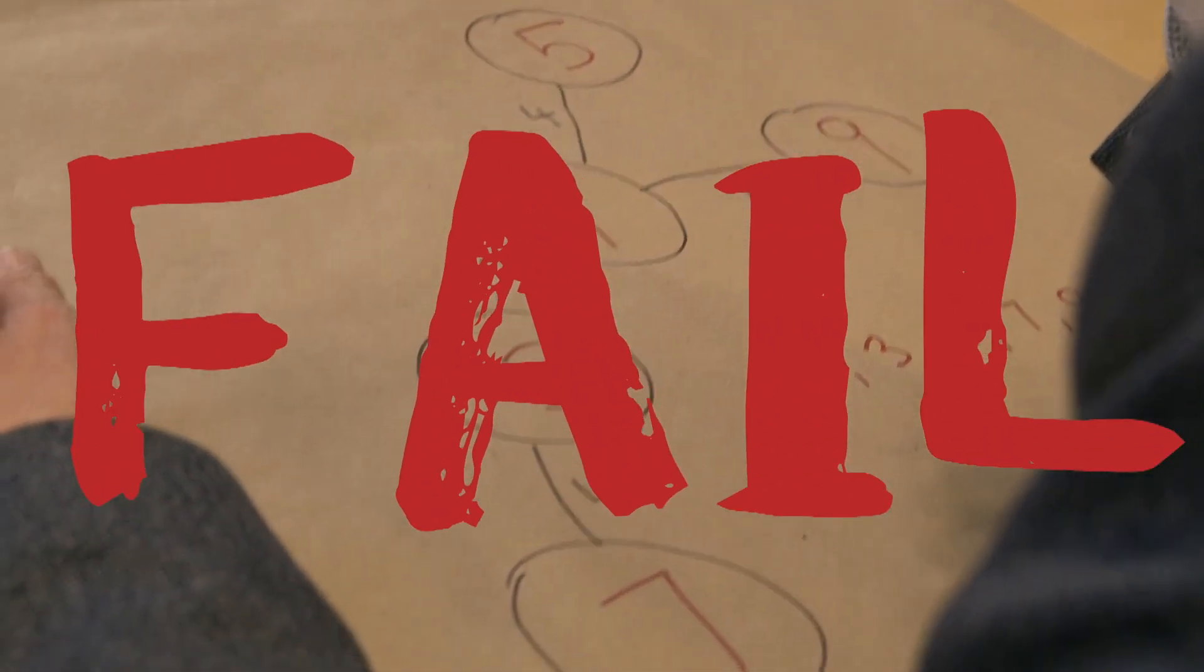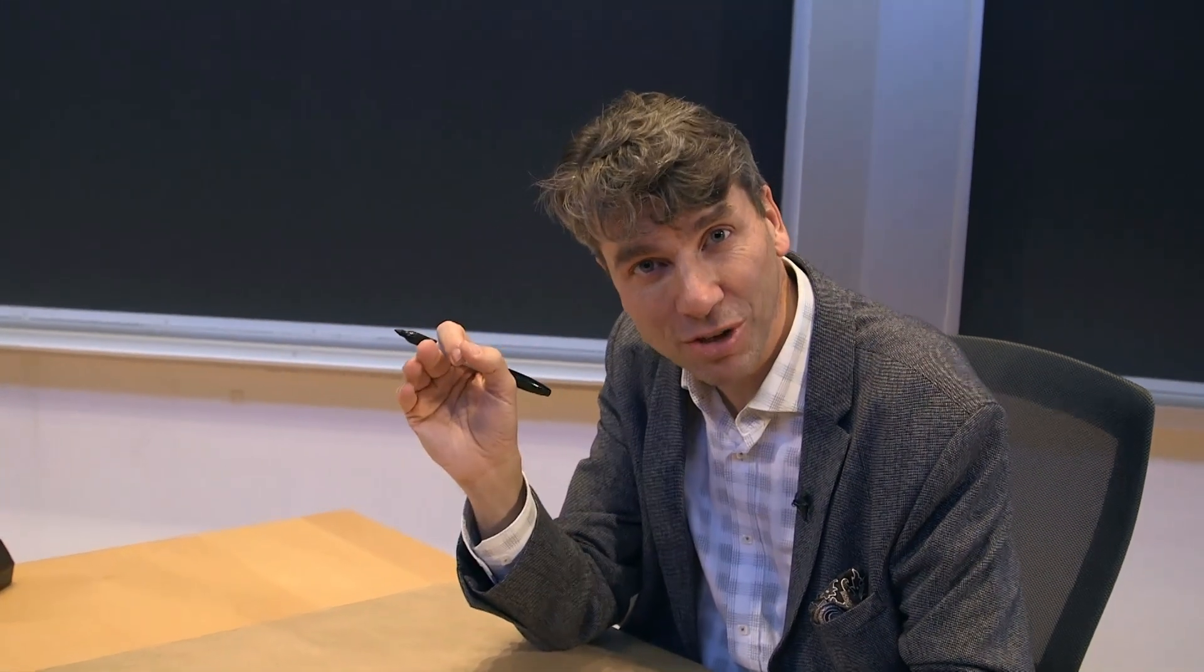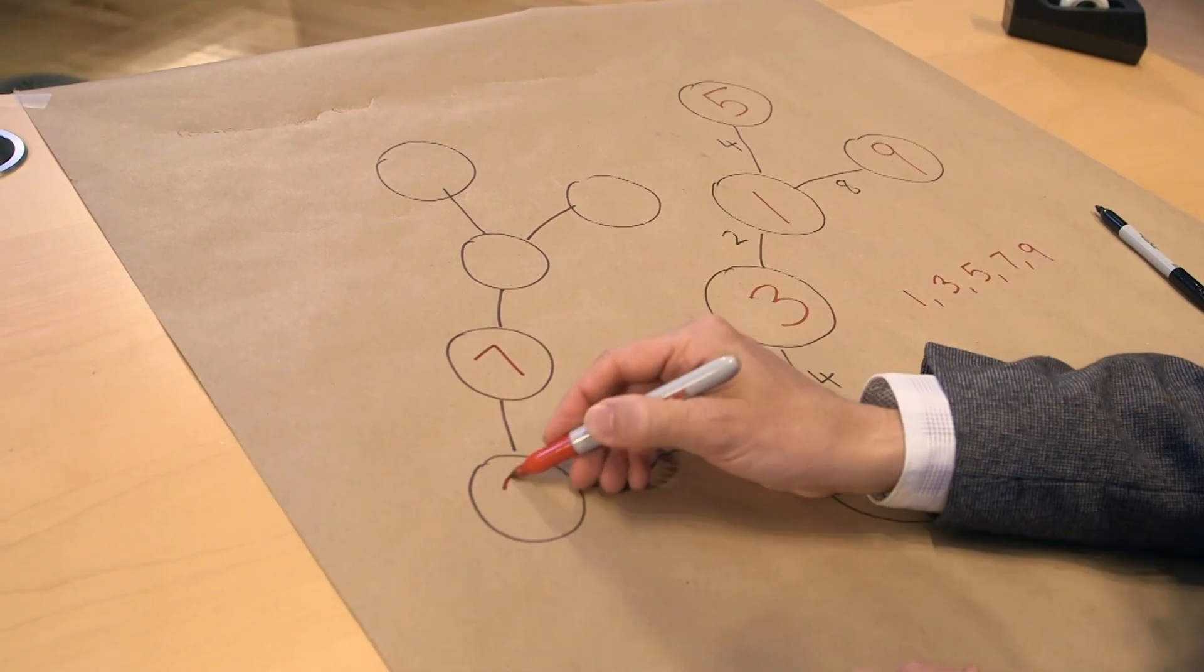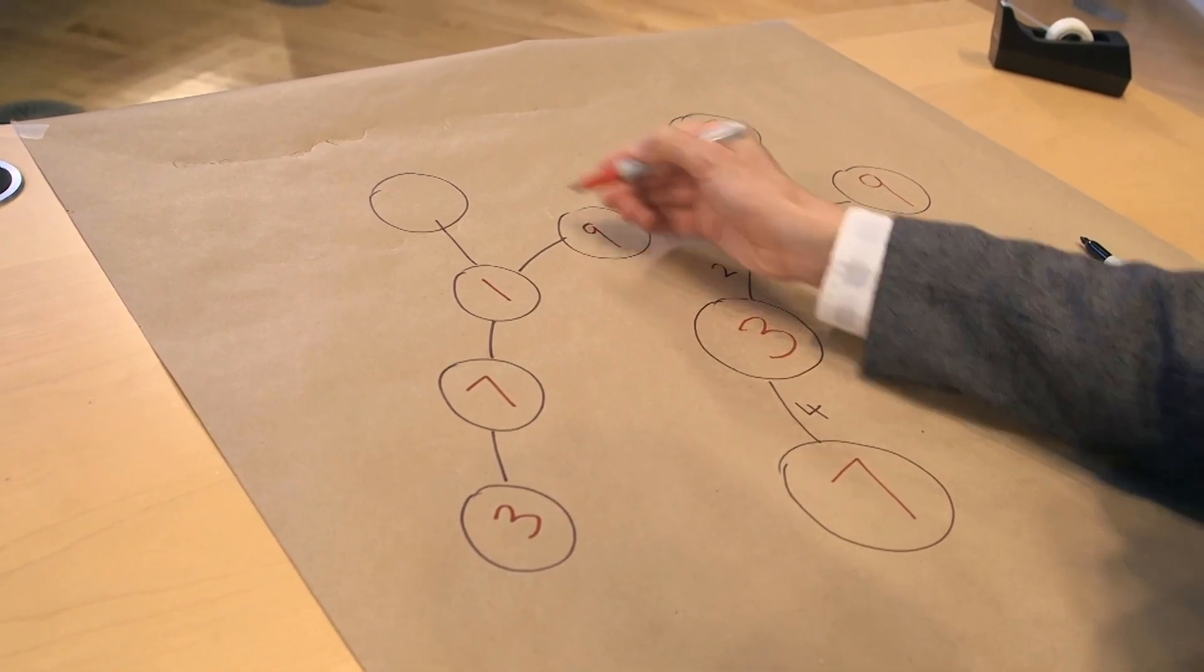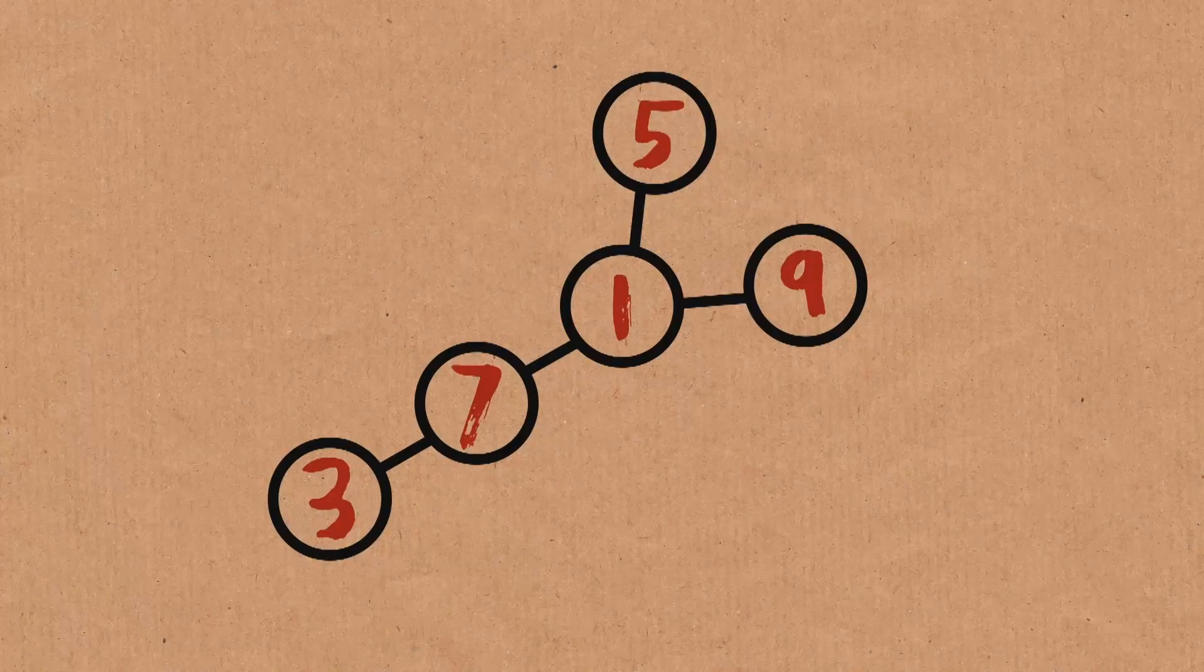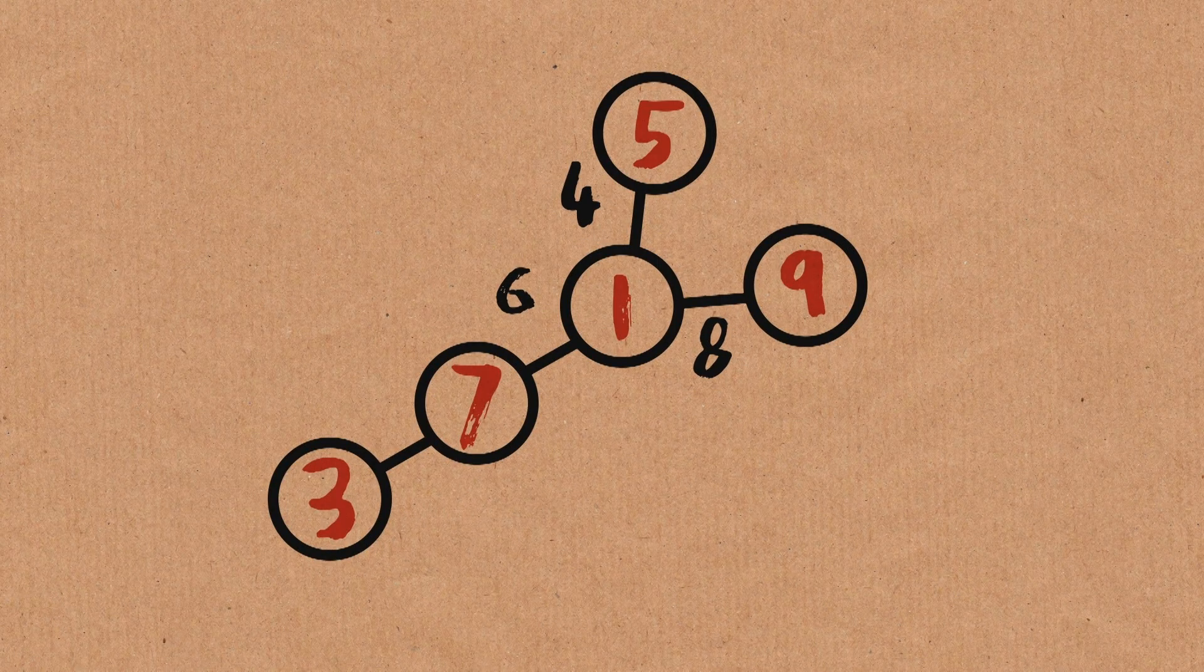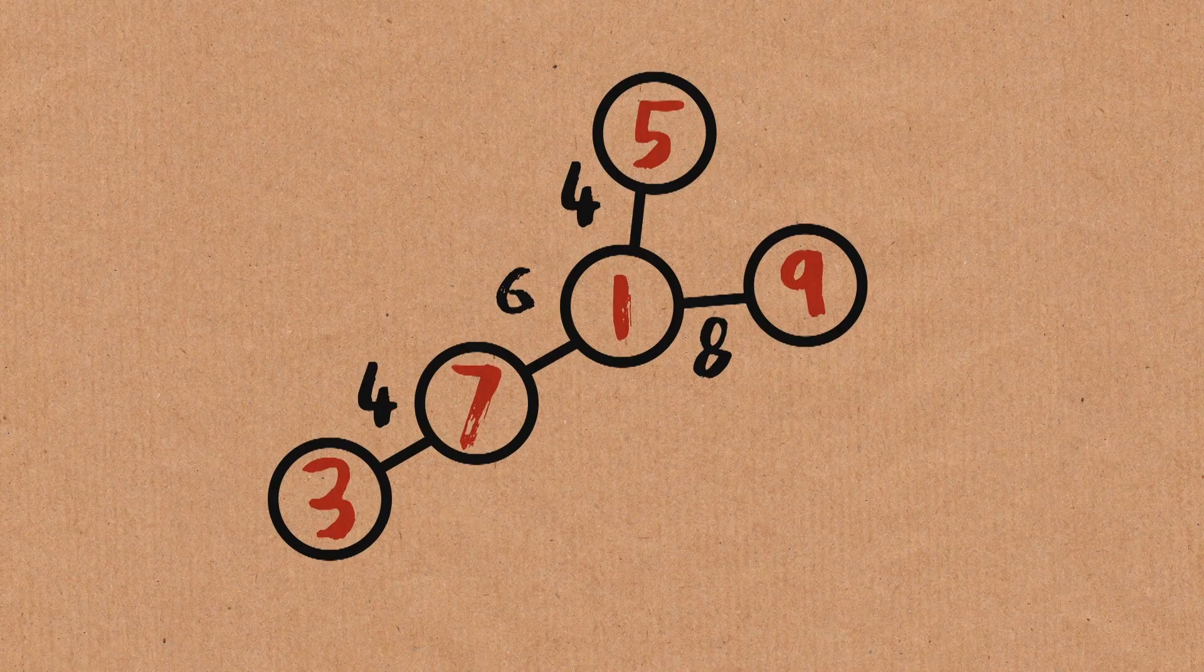So we failed. This is an example of a failure. Your job is to try to make all of those differences different. If I go seven, three, one, nine, five, then we have four and eight and six and four. Oh wait, no, this is still a disaster.